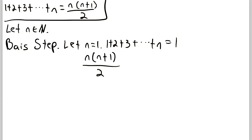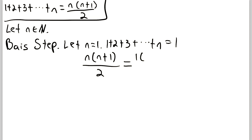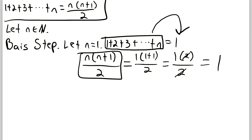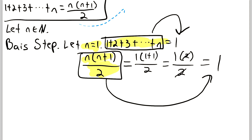Substituting n equals 1 into n times n+1 divided by 2, we get 1 times 1+1 divided by 2, which equals 1 times 2 divided by 2. The 2s cancel and we're left with 1. By the transitive property of equality, both the sum and the expression equal 1, so they are indeed equal when n equals 1. The basis step is complete. It's very normal for the basis step to be trivial — this is not the hard part.